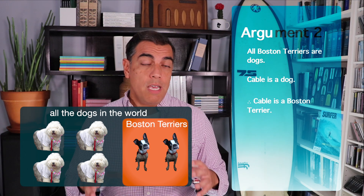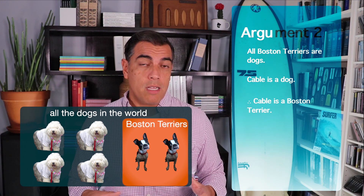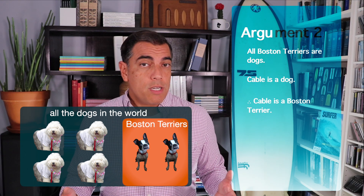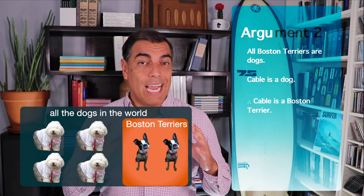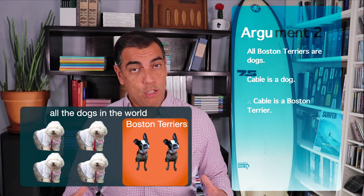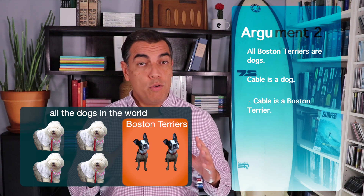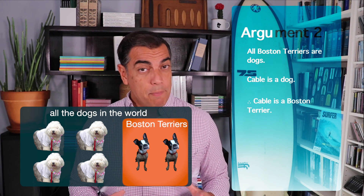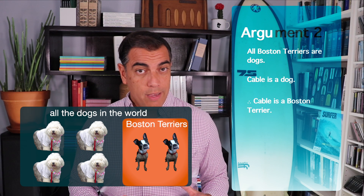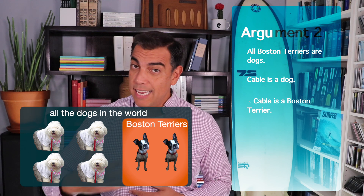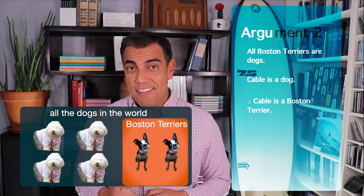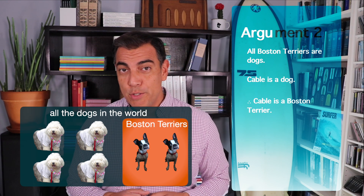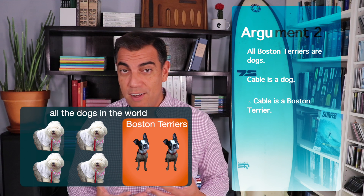In other words, given the premises, the conclusion doesn't have to be true — the premises don't guarantee the conclusion. Now, the conclusion does happen to be true, by the way. My dog is a Boston Terrier. In fact, that dog on your screen is my dog.